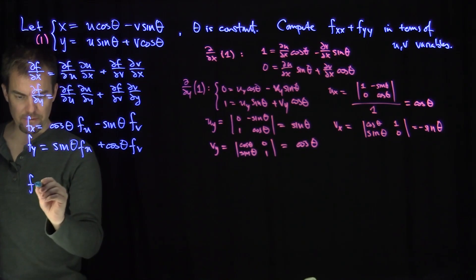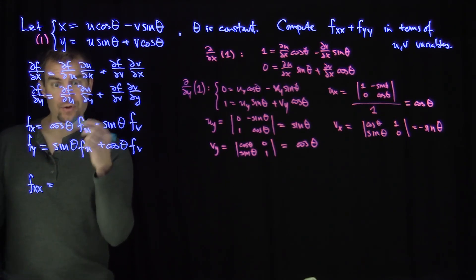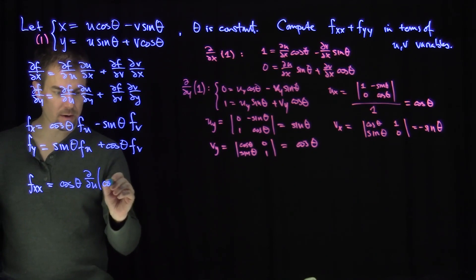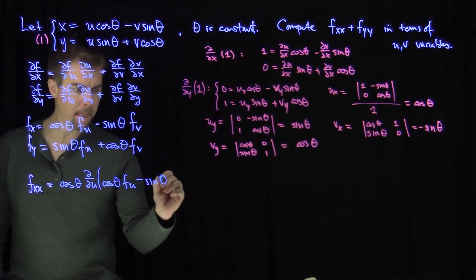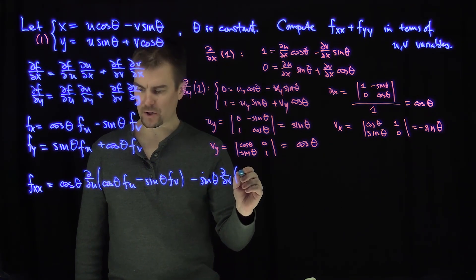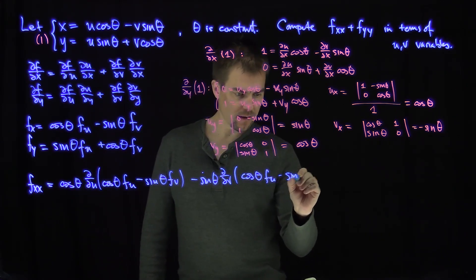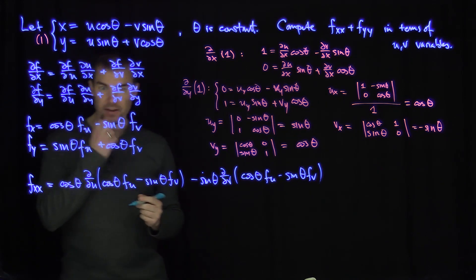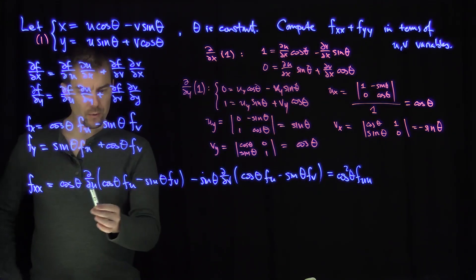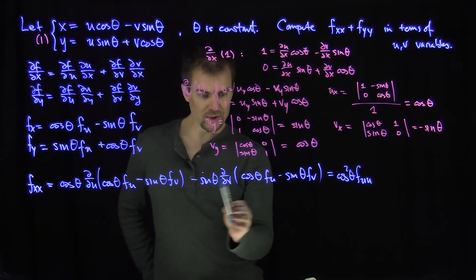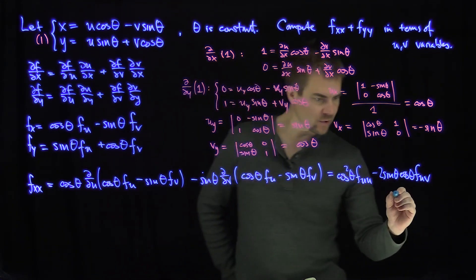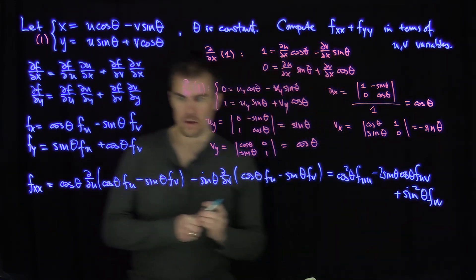Now let's compute the second x-derivative fxx. To take an x-derivative we apply cosθ times a u-derivative minus sinθ times a v-derivative. Expanding fxx yields: cos²θ · fuu - 2sinθ cosθ · fuv + sin²θ · fvv.